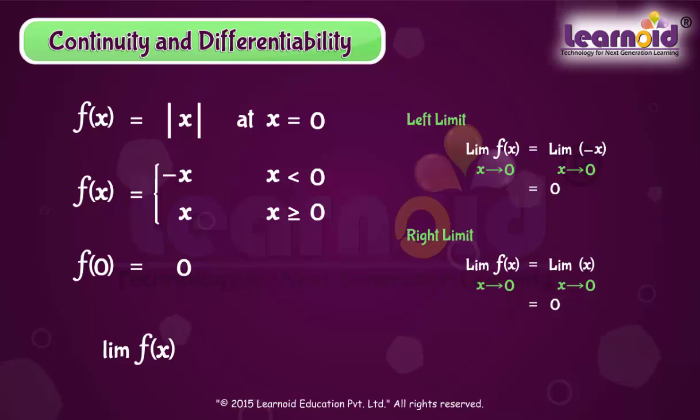Thus, left hand limit, right hand limit, and value of the function at x is equal to 0 is equal to 0. Hence, f(x) is continuous at x is equal to 0.